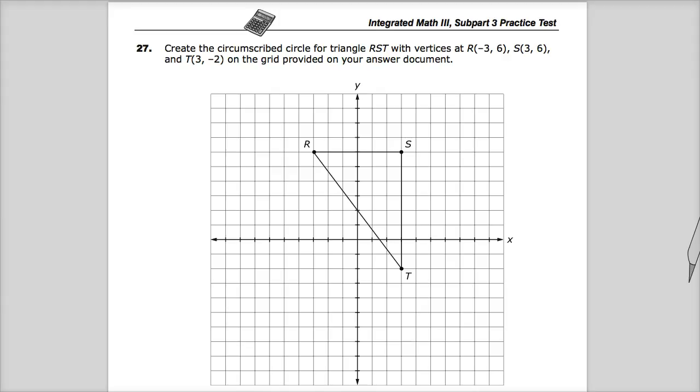If you look at the answer sheet, it actually gives you just the same thing as the question because you have to circumscribe, and apparently they didn't do that or it didn't print or something. At least on my copy. But create the circumscribed circle, which is to say a circle that has all the points here as part of itself. Basically, the circle completely envelops this triangle.